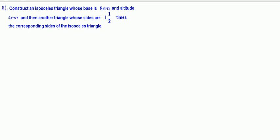Let us study one more construction problem. Construct an isosceles triangle whose base is eight centimeter and altitude four centimeter, and then another triangle whose sides are one and one-half times the corresponding sides of the isosceles triangle. Let us consider the scale factor one and one-half, that is equal to three by two. So two ones are two, two plus one equals three.